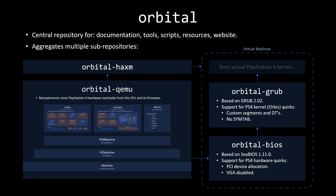The kernel has some differences from FreeBSD: there are custom segments and dynamic tags, and there is no symtab. Grub freaks out when it sees a FreeBSD kernel with no symtab, so all of that needs to be patched. Orbital BIOS and Orbital Grub are pieces of software that run inside the virtual machine — a common misconception is that they are part of the emulator, but they're not. They mock the processes the actual PS4 bootloader would do, and the final step is jumping to the actual kernel, as seen in the top right corner.